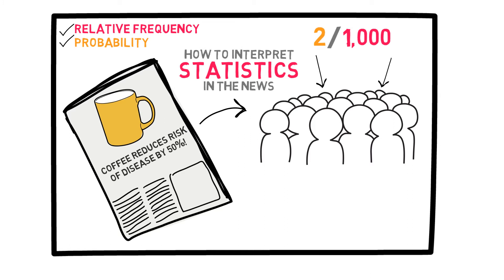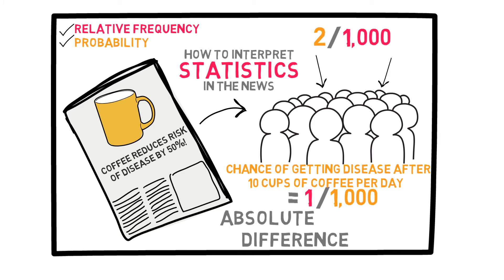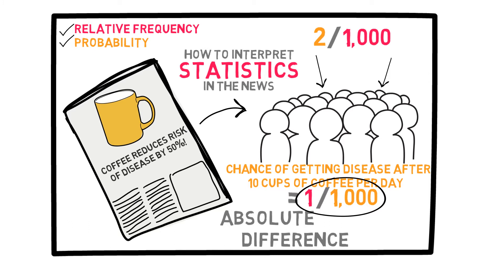Now, if we reduce this by 50%, what do we get? 50% of 2 over 1,000 is only 1 over 1,000. So, before drinking 10 cups of coffee per day, your odds of having this disease were 2 over 1,000, and afterwards it's only 1 over 1,000. It's a very small decrease — both of them are very small numbers, and the absolute difference is only 1 over 1,000.